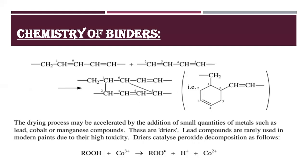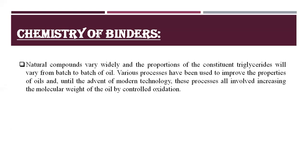The drying process may be accelerated by the addition of small quantities of metals, such as lead, cobalt, or manganese compounds — these are also called dryers. Lead compounds are rarely used in modern paints due to their high toxicity. Natural compounds vary widely, and the proportions of constituent triglycerides will vary from batch to batch of oil. Various processes have been used to improve the properties of oils, often involving increasing the molecular weight by controlled oxidation.